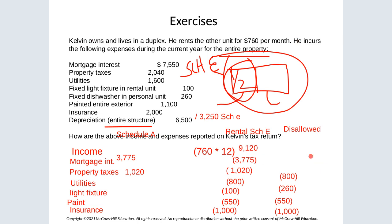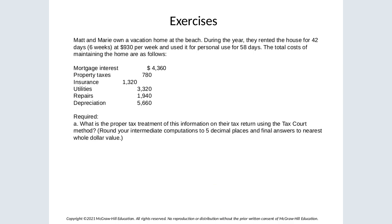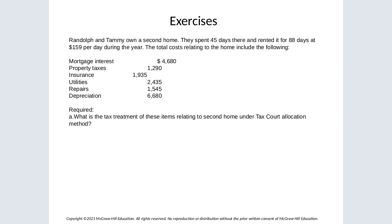To complete Schedule E, we only include the rental portion. For Schedule A, only the mortgage interest and property taxes are deductible. Everything else is considered personal and not deductible. Now let's look at the Tax Court allocation for a property that is both rental and personal.